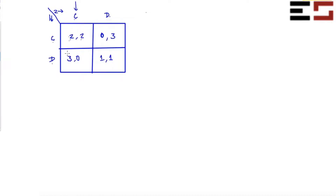I'm going to put a circle around D to indicate it is the best response to C. Now if player two plays D, then the best response of player one is again D, because in that column one is greater than zero. So I put a circle around one.